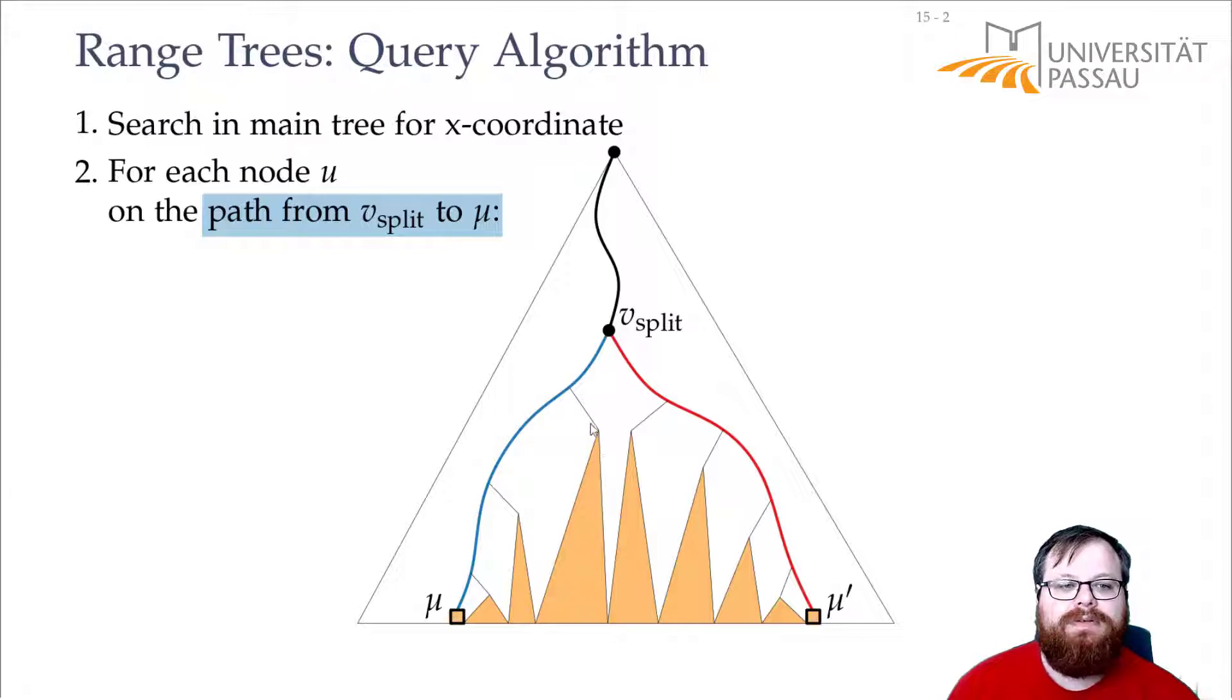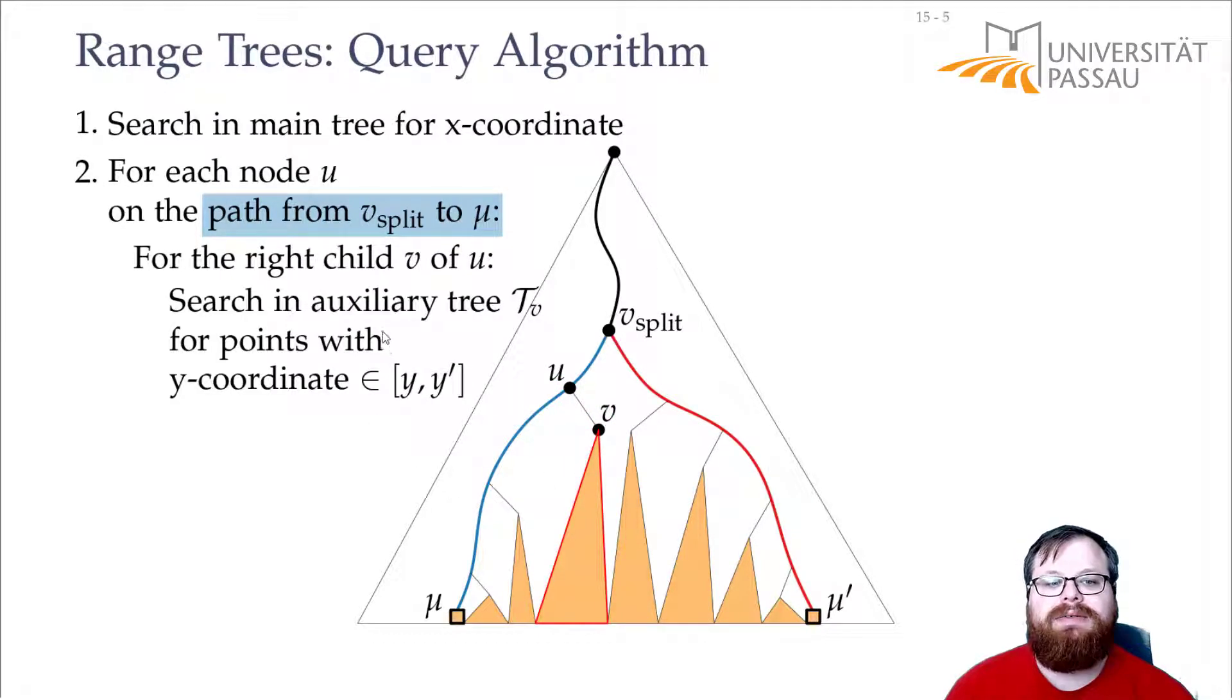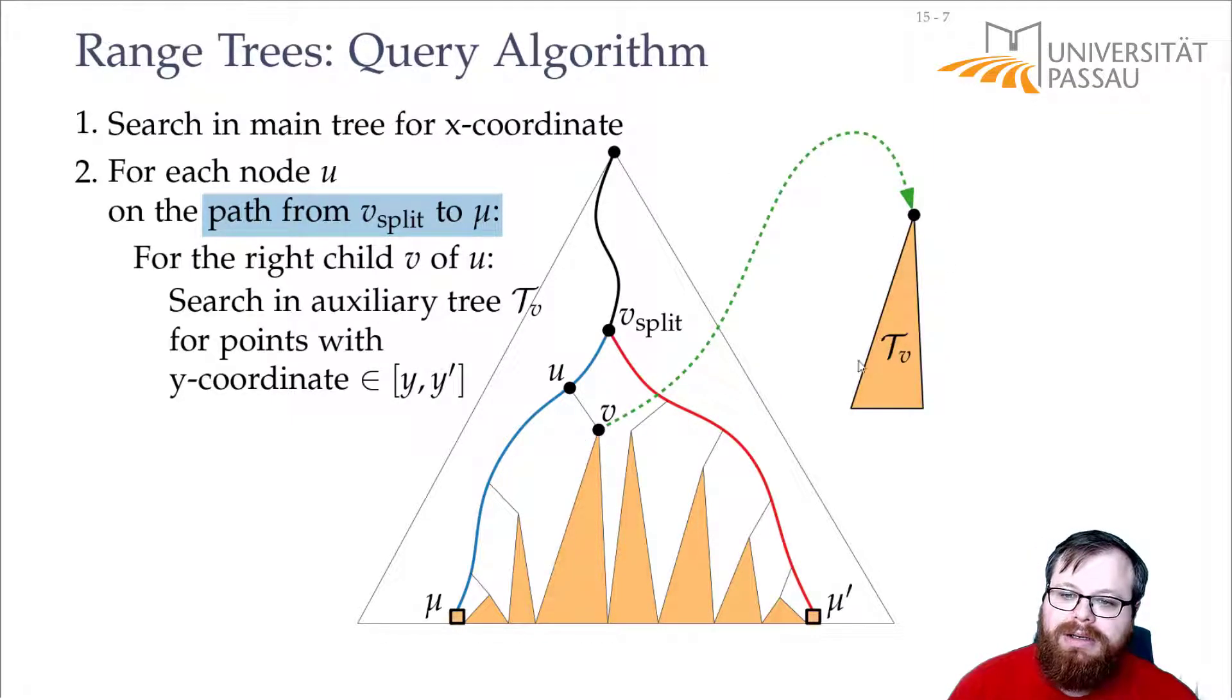Now with each of these nodes we have to find some second level tree. So we take our vertex u, we have the right child, this is the canonical subset, and then we have some auxiliary sub-tree that has all those points sorted by the y-coordinates. So this points to some auxiliary sub-tree, tv.